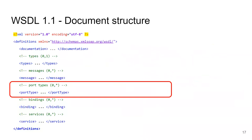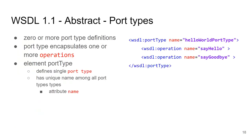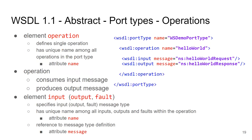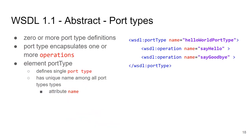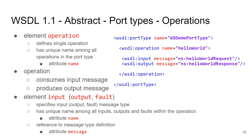We can now define the port type, which is the overall abstract web service. It consists of the operations the web service implements. Here we have a 'helloWorld' port type with operations 'sayHello' and 'sayGoodbye'. Each operation consists of a set of messages — for instance the operation has an input message and an output message. To call this operation you send the input message and receive a response corresponding to the XML schema definition.